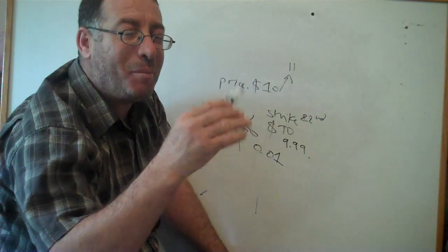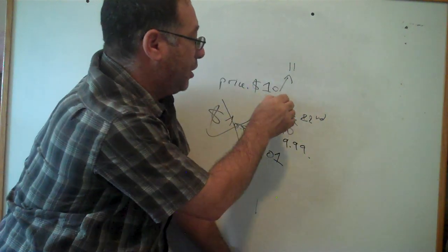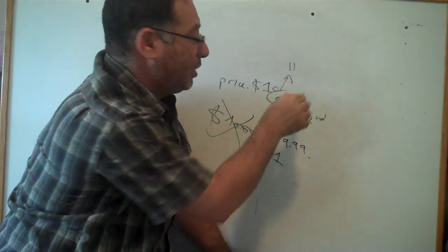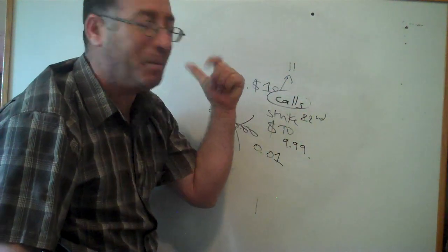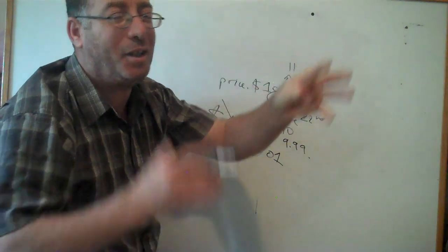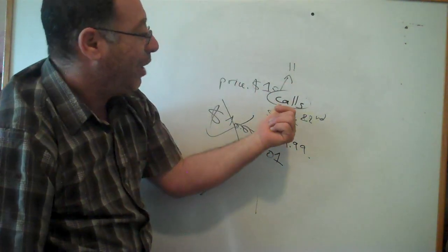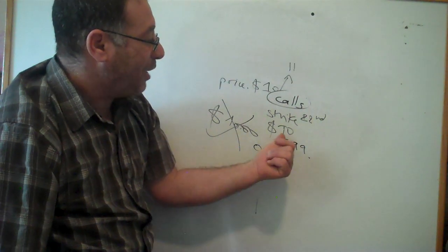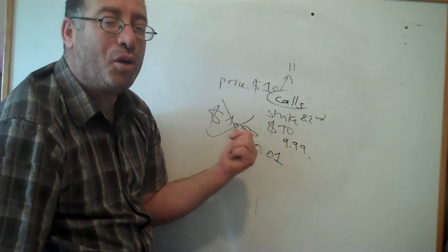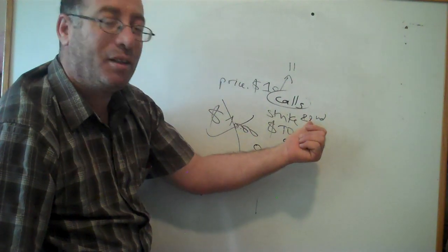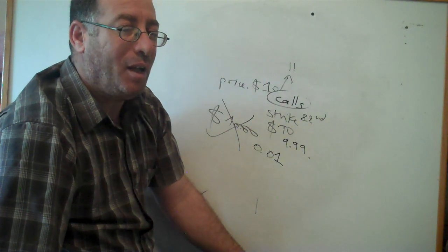I should clarify: everything I have been saying about calls — I forgot to mention that. All the last examples are about calls, meaning you think the stock goes up. If the stock goes down just one cent below the strike when the option expires, you will lose all your money.